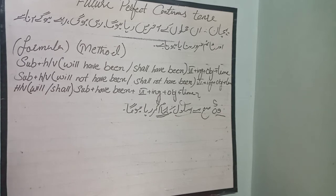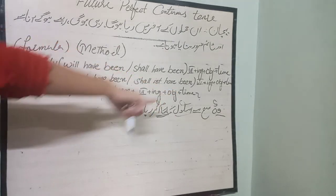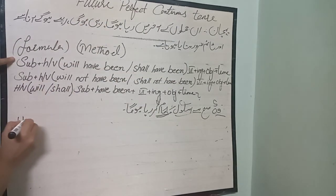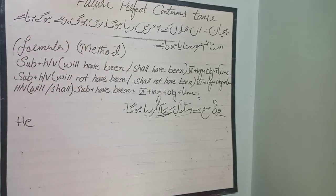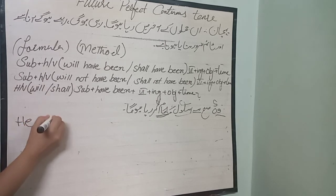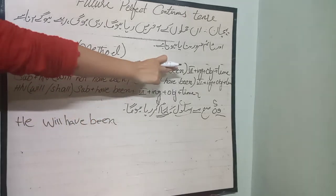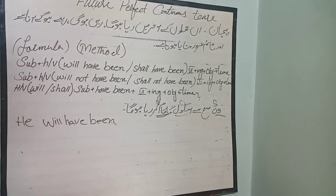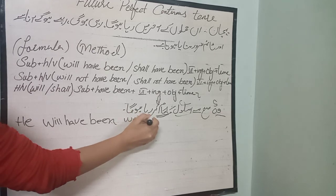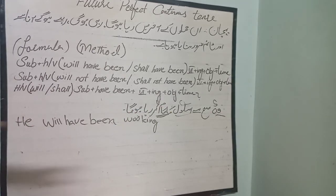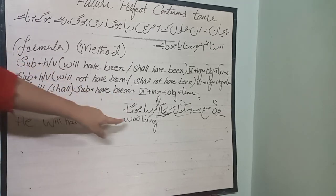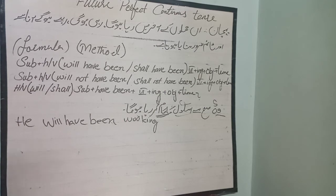Now we start making the sentence. Subject is he. He will have been — will have been or shall have been. What is our work? Work — working. He will have been working.